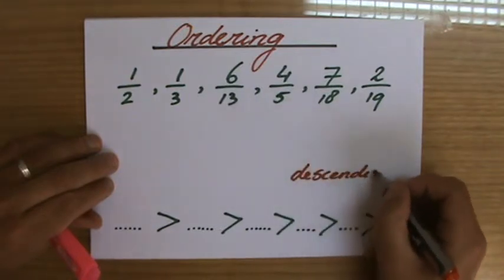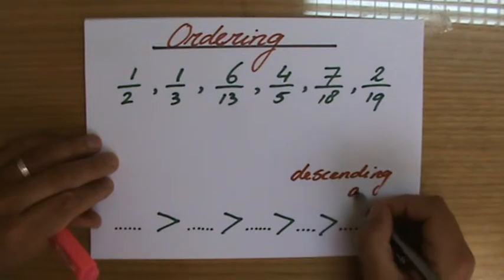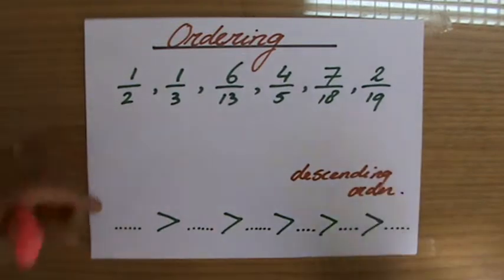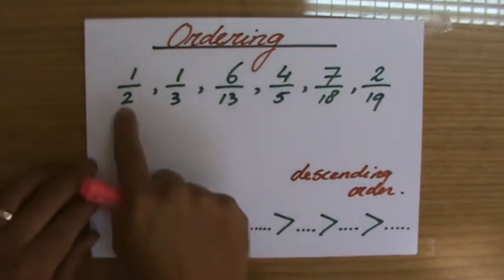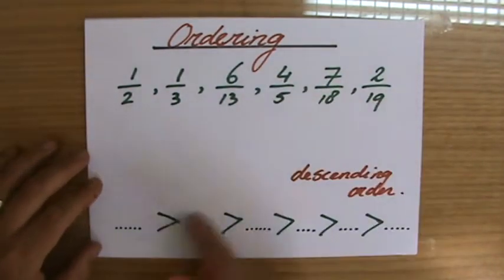So I have 1/2, 1/3, 6/13, 4/5, 7/18, 2/19. One, two, three, four, five, six numbers.